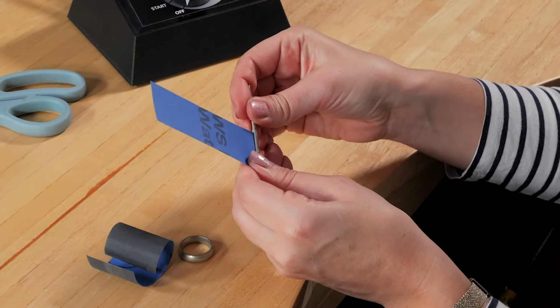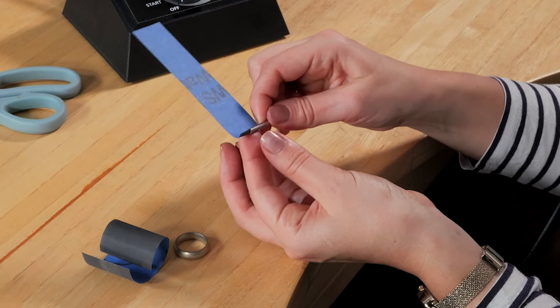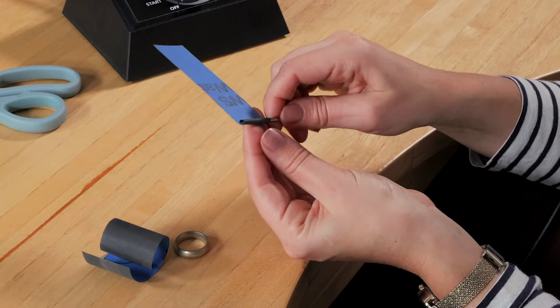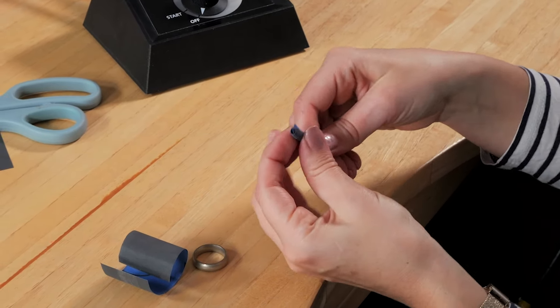There we go. Just push it down as far as it can go, and then using my finger or thumb I'm just going to curl it round. It doesn't need to be perfect, but I'm just wrapping it up like a sausage.